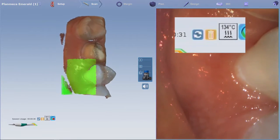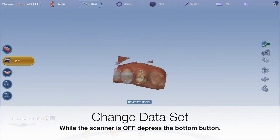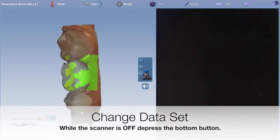In the lower left, after you've turned off the scanner, you can generate the model and move to the next scan option by depressing the bottom button.